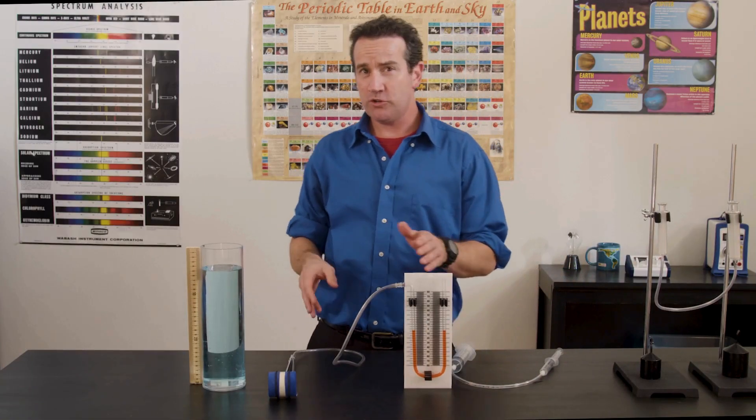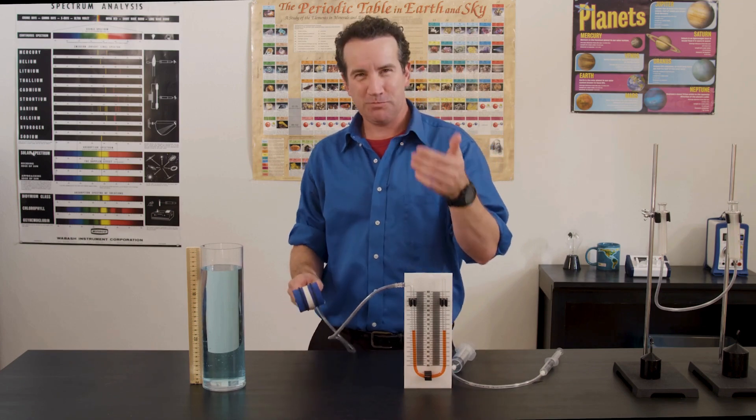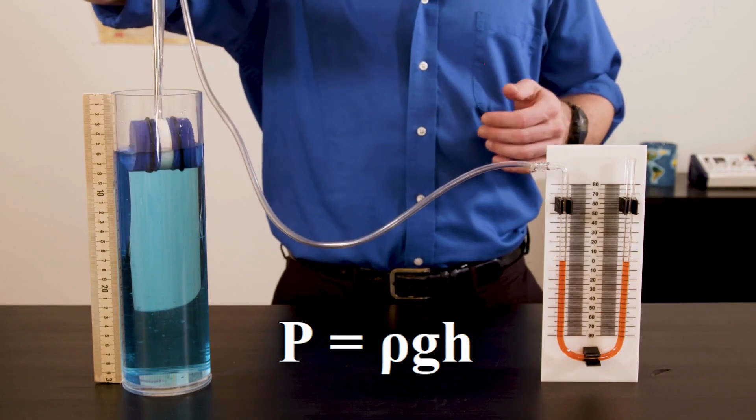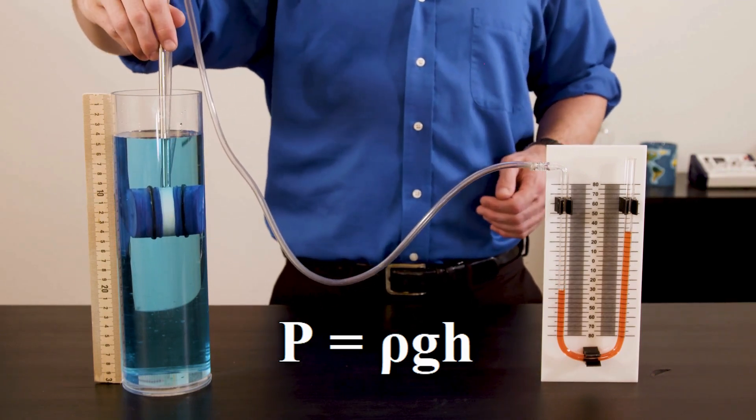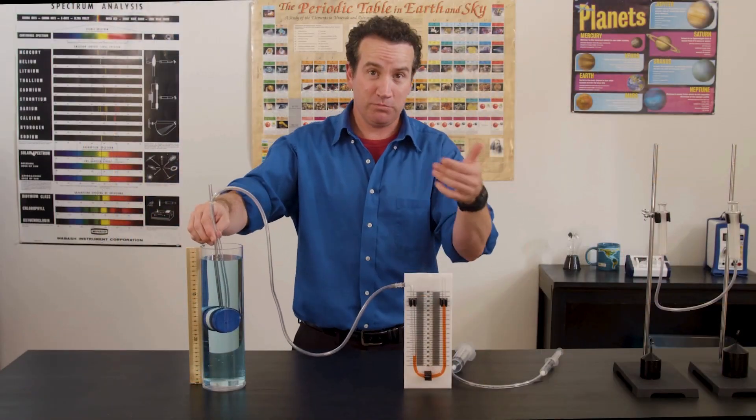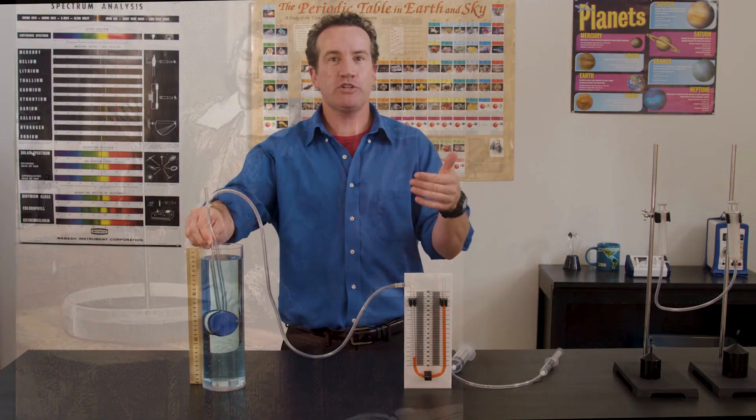But pressure can also be measured by depth. And Pascal explains this too. P equals rho g h means that pressure doesn't depend on area, only depth and density. So we can use depth to predict pressure. And this is something that Torricelli explained.